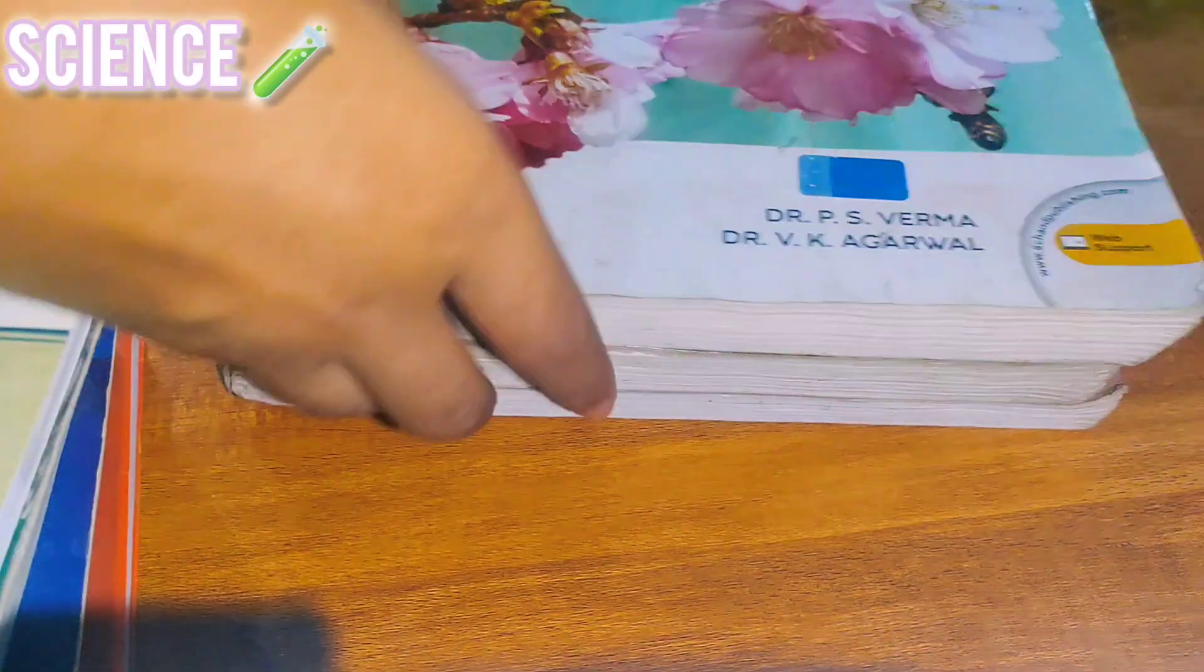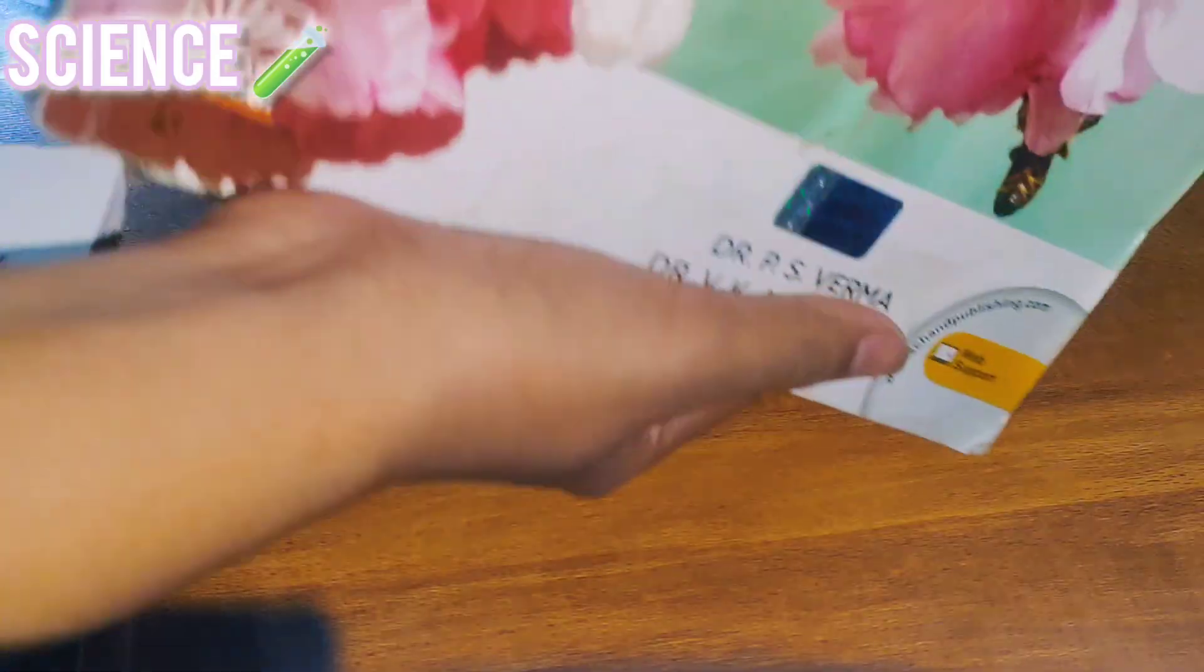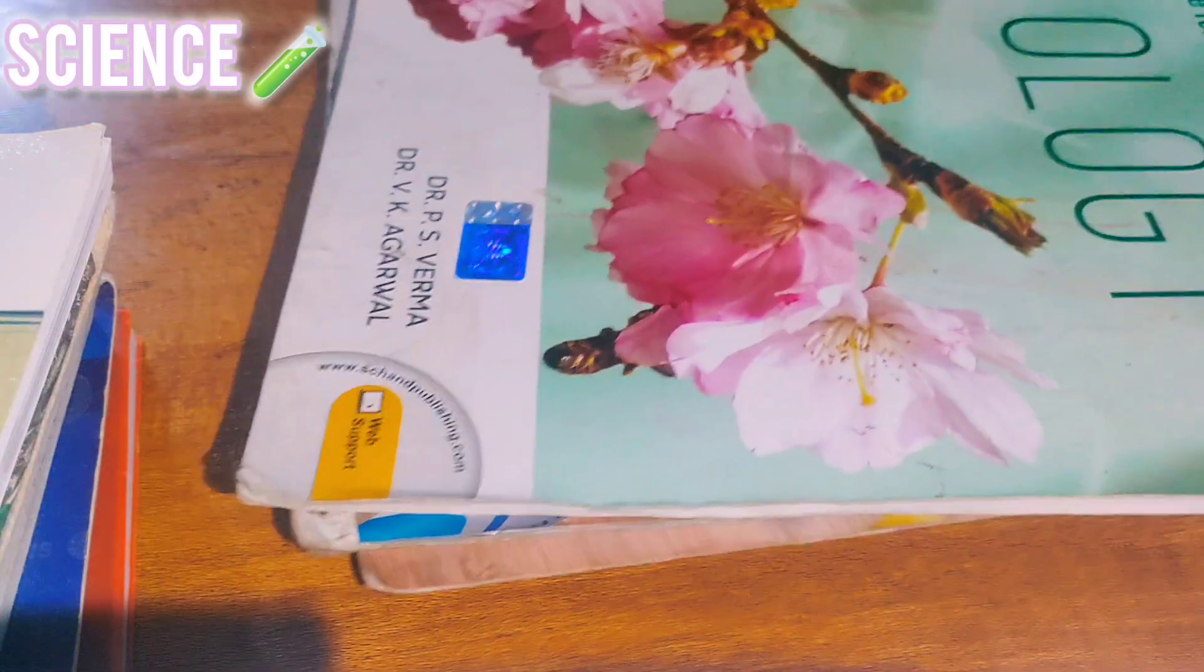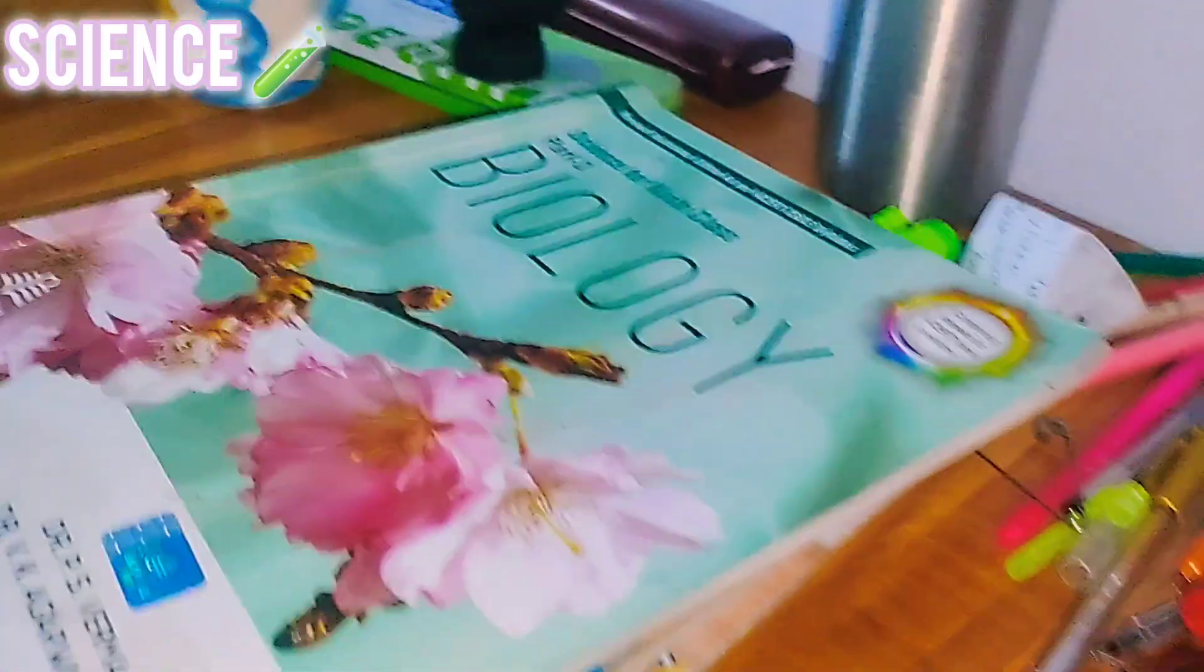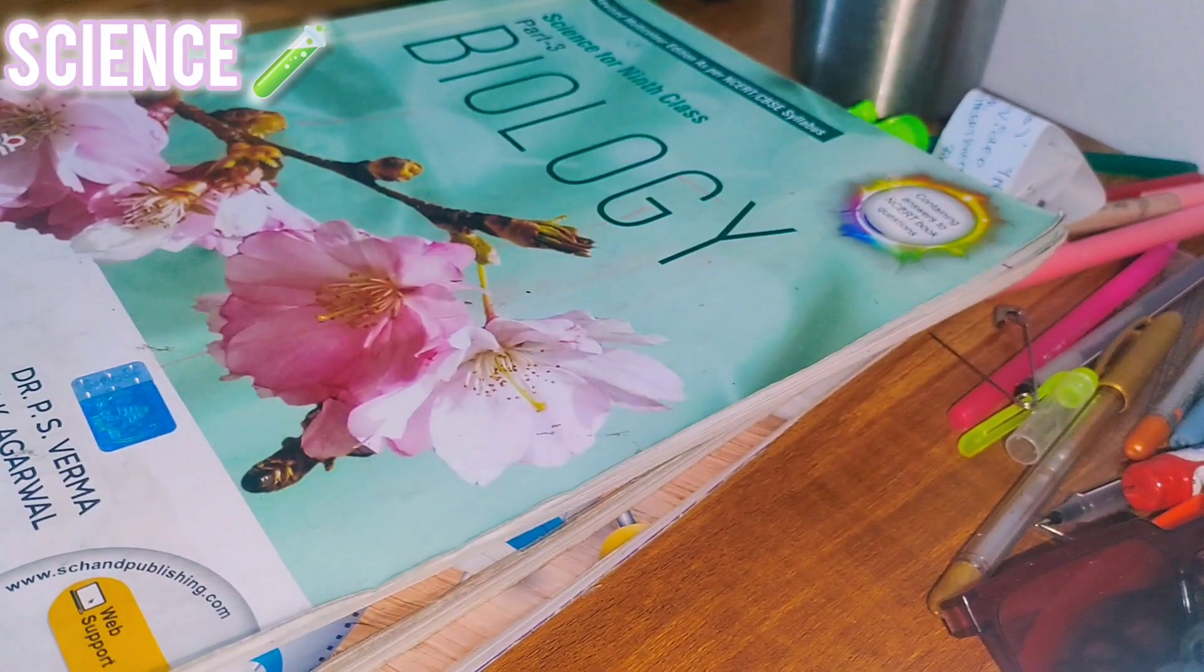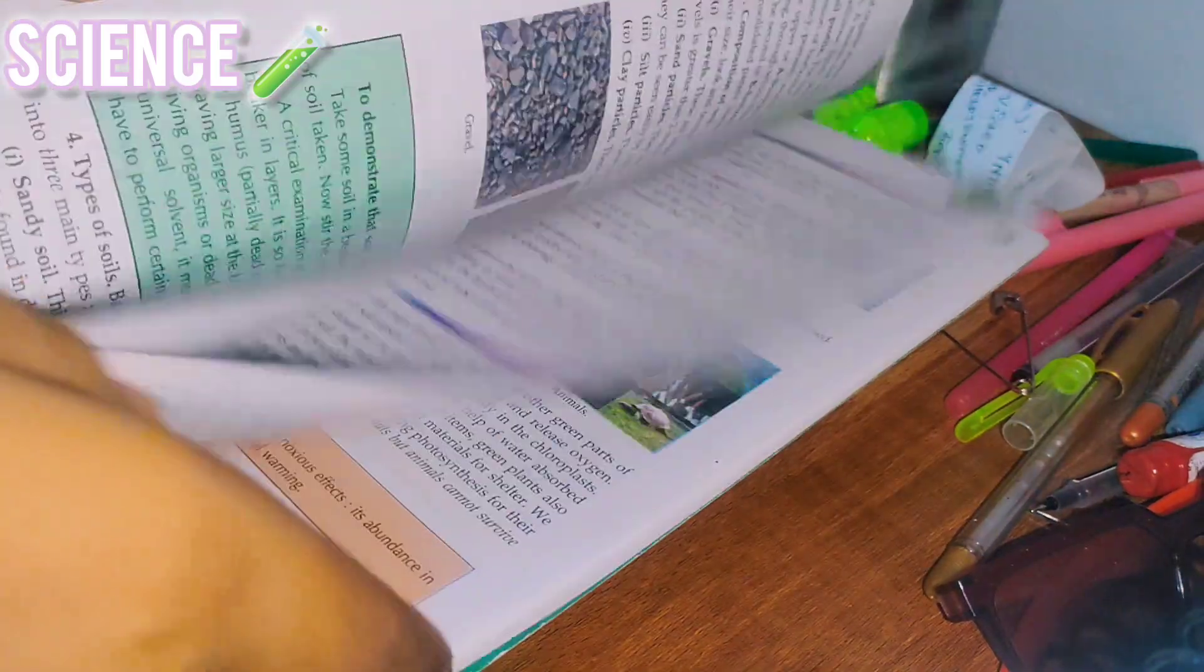Next one is the science one. These are Ashan books. I bought three of them: biology, chemistry, and physics. Yeah, these are pretty good. They cost me around 1500, but the biology one was given by a senior of mine.